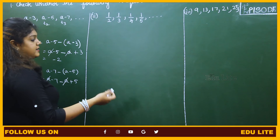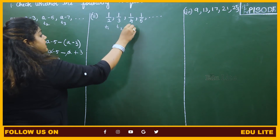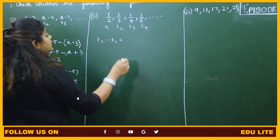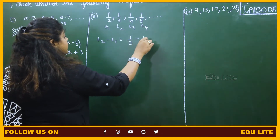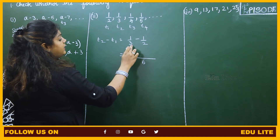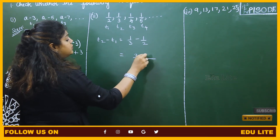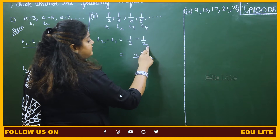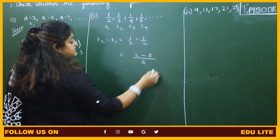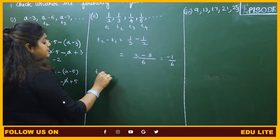For the second subdivision, we follow the same steps. We identify T1, T2, T3, and T4. T2 minus T1 is 1/3 minus 1/2. Taking LCM of 3 and 2, which is 6: multiply the first fraction by 2 to get 2/6, and multiply the second by 3 to get 3/6. So T2 minus T1 equals minus 1/6.